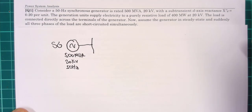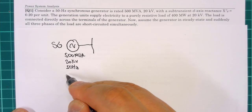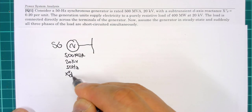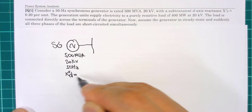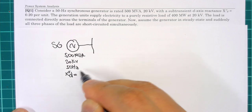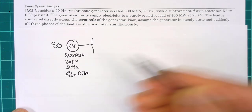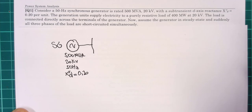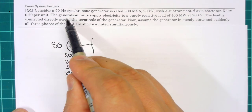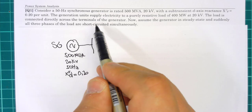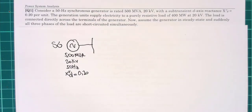The subtransient reactance on the direct axis is 0.20 per unit. This is a single generation unit supplying electricity to the load.